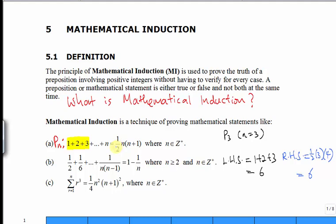But is that sufficient to prove for all values of n, where n is a positive integer — meaning n takes the values of 1, 2, 3, and so on? Obviously, by proving that P3 is true, it is not sufficient to prove that this statement is true for all values of n. And that is where mathematical induction comes in.